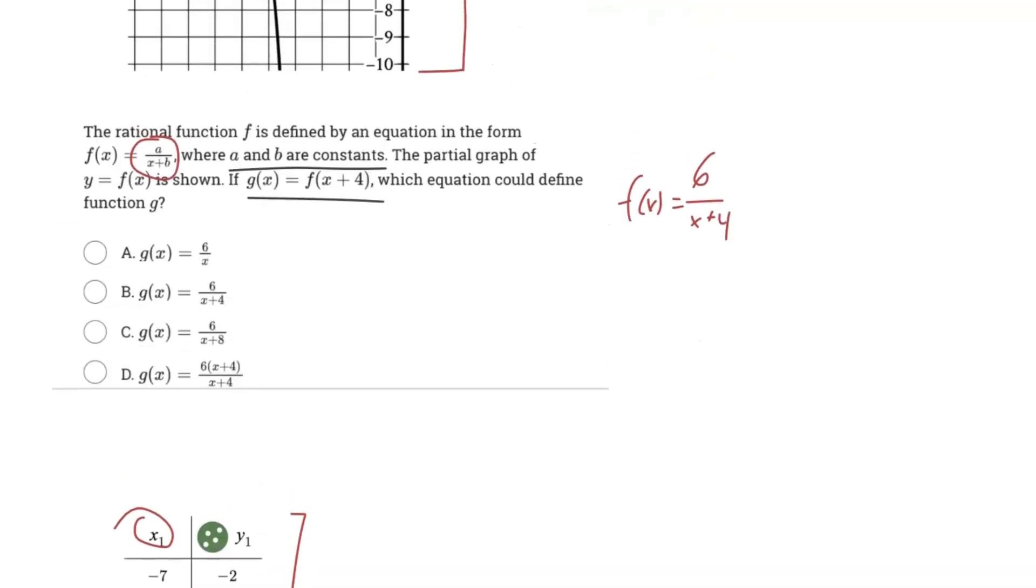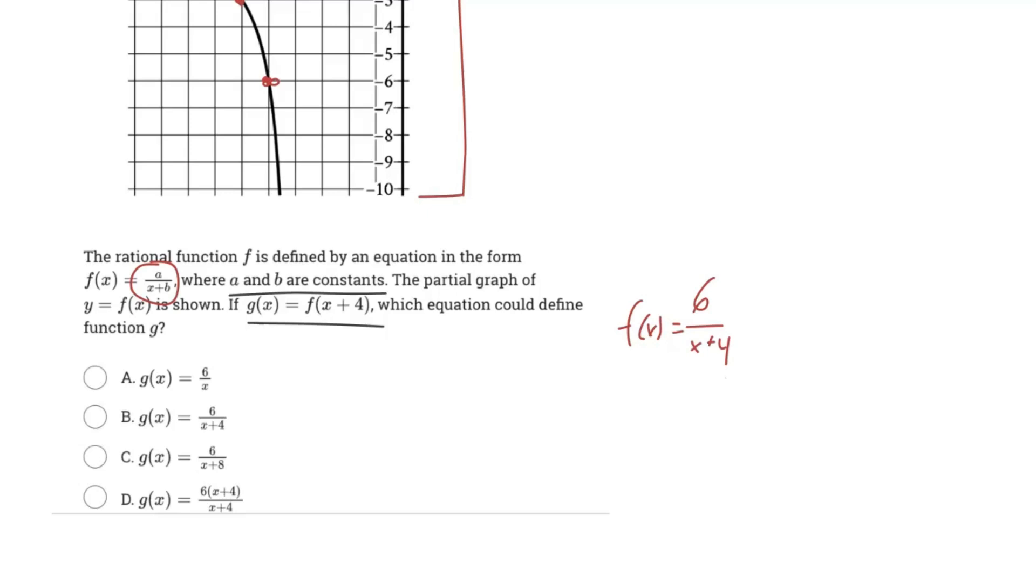So that's cool. We know what f(x) is, but now we need to identify what g(x) is. g(x) = f(x+4). This plus 4 right here is basically a transformation of the function to the left. So if we're looking at our f(x) function, how do we transform this function to the left four units?